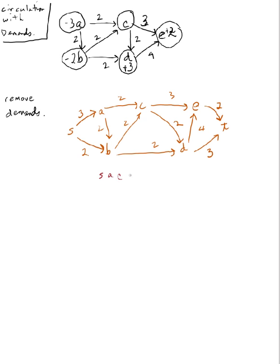And that gives me a bottleneck of minimum three, two, three, two. So bottleneck of two. So I update my flows on all of those.